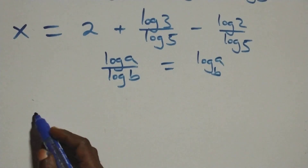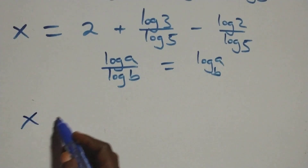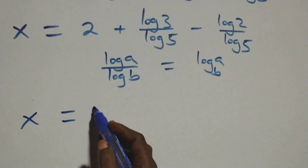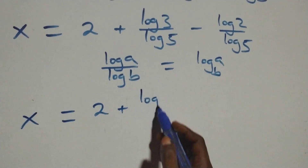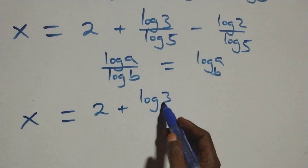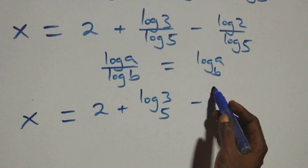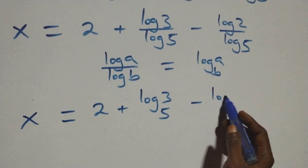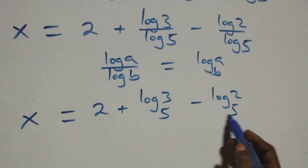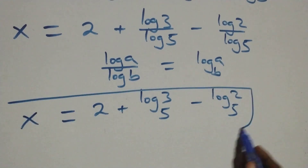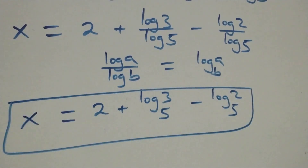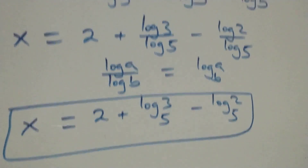So what we have here becomes x equals 2 plus log 3 base 5, minus log 2 base 5. That is, the value of x is 2 plus log₅3 minus log₅2. Now let's verify this satisfies the given problem.